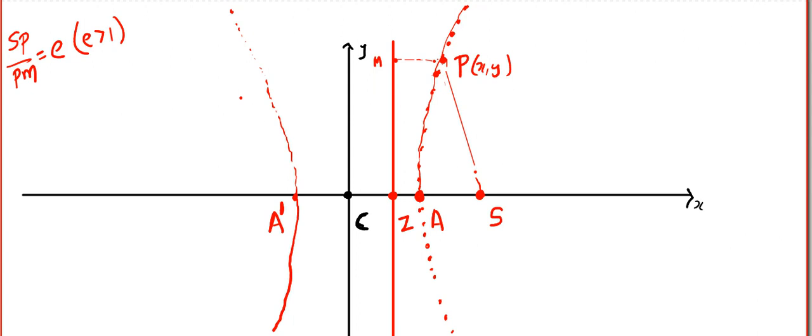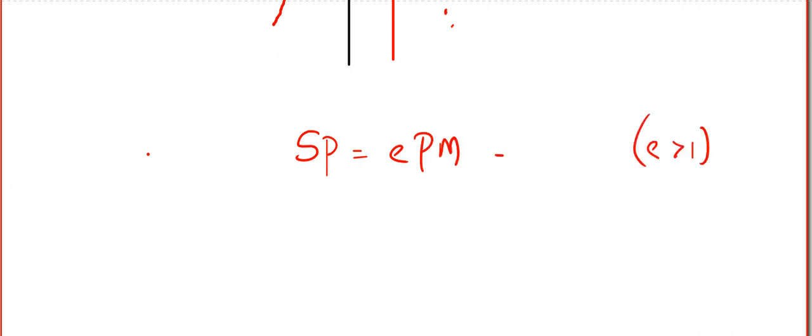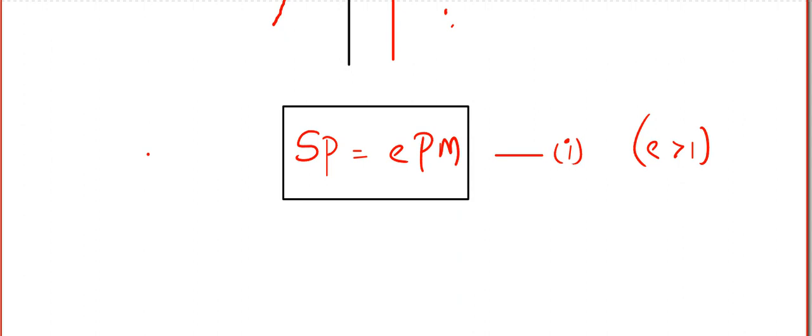P is adjusted in such a way that SP by PM will be a quantity bigger than 1, meaning the numerator should be bigger than the denominator. Once we collect all the points that balance this ratio, the standard hyperbola will appear. P keeps on moving and creates the standard hyperbola. So that is the first part. I got one relation: SP is equal to E times PM, where E is chosen such that E is greater than 1. We are in search of two quantities — the distance S to P and the distance P to M. Once you get SP and PM, you are ready for the derivation.